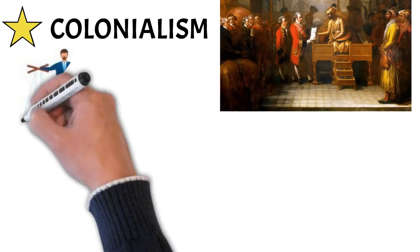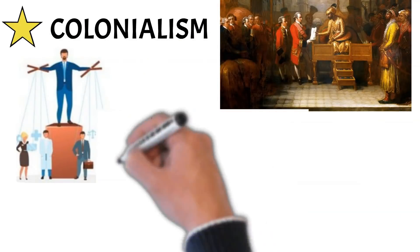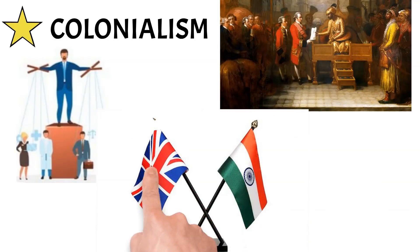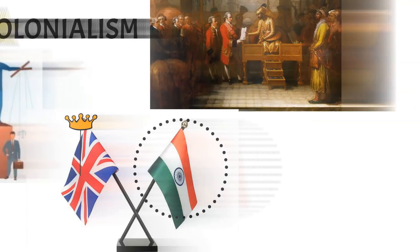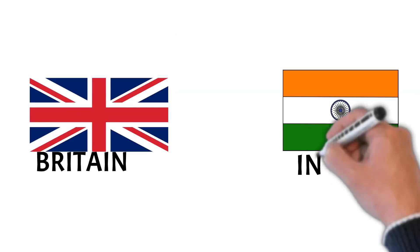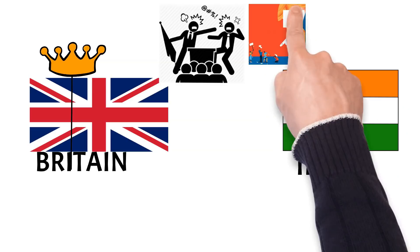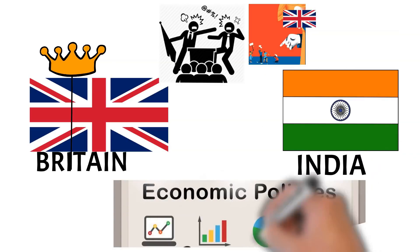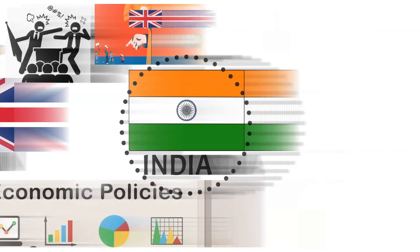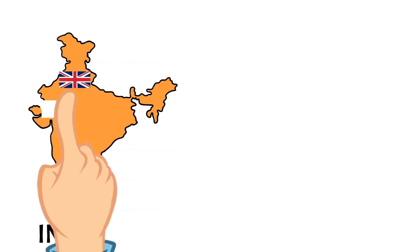Colonialism: It refers to a system of political and social relations between two countries, of which one is the ruler and the other is its colony. The ruling country not only has political rights over the colony but also determines the economic policies of that country — as with the British government as ruler and India as its colony.